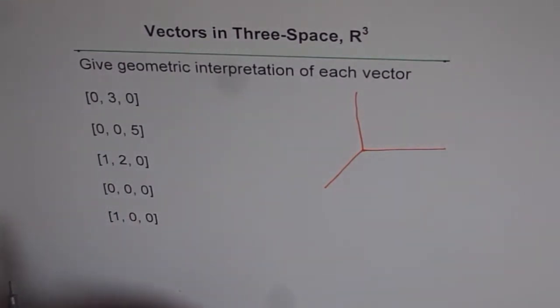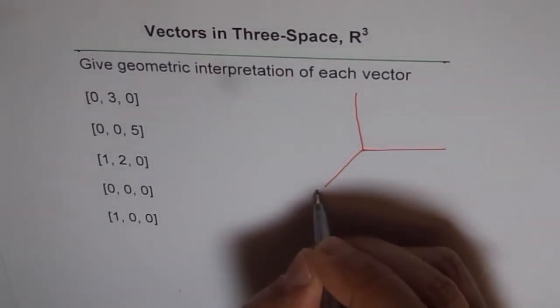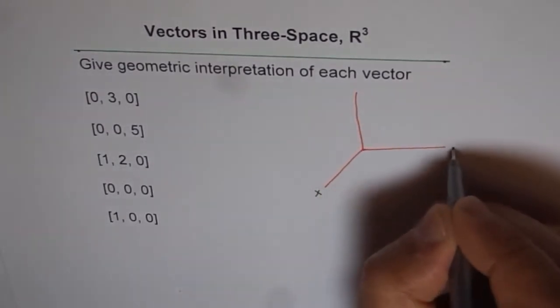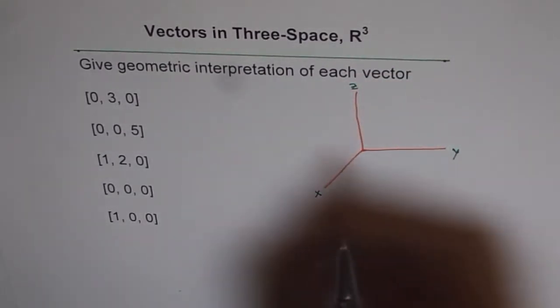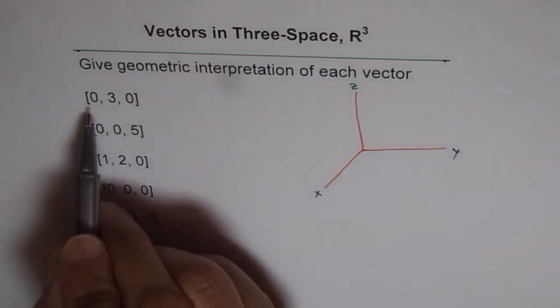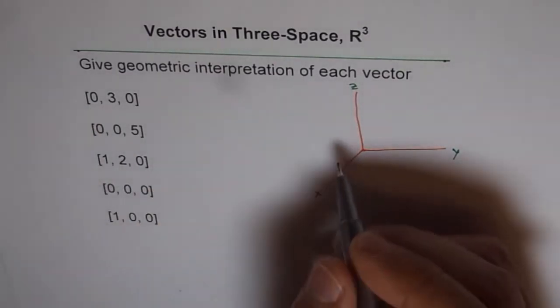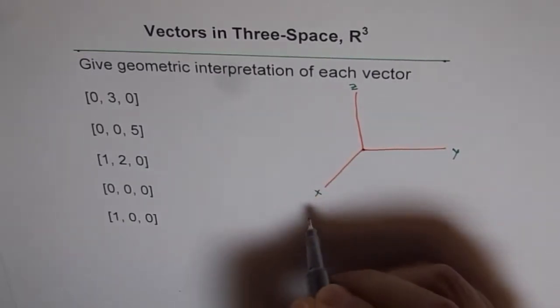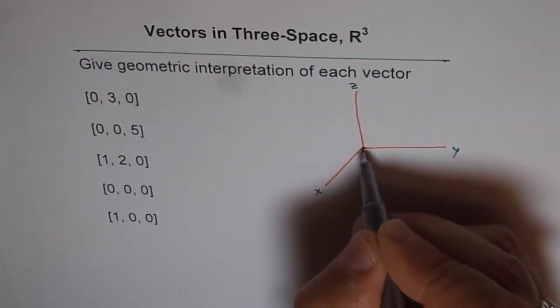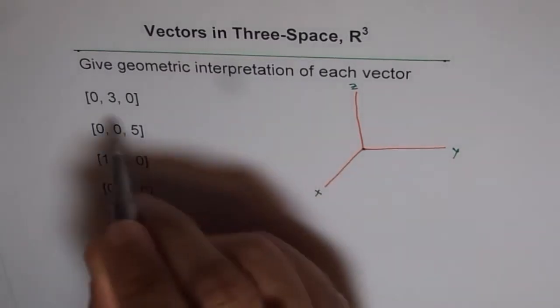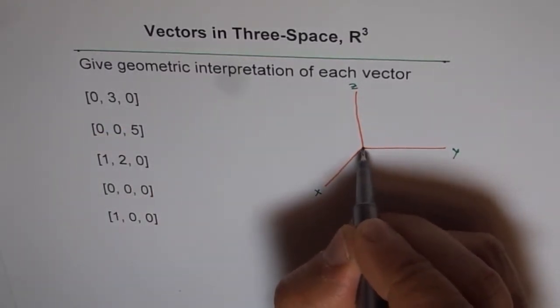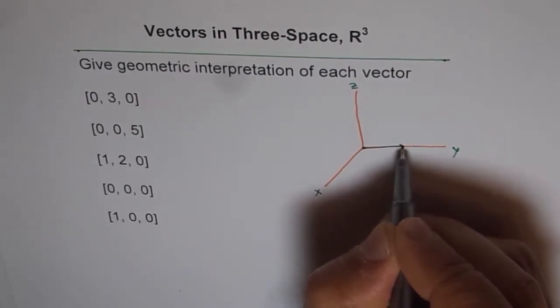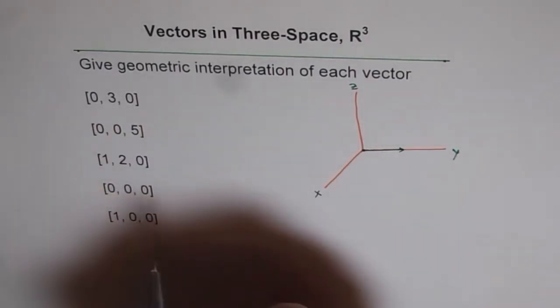That's our coordinate system where x, y, and z are the three coordinate axes. Now here the vector (0, 3, 0), that means if you're starting at the origin, you move zero units towards x (that means you don't move), and then you move three units along y. So if I move three units along y, I will reach somewhere here.